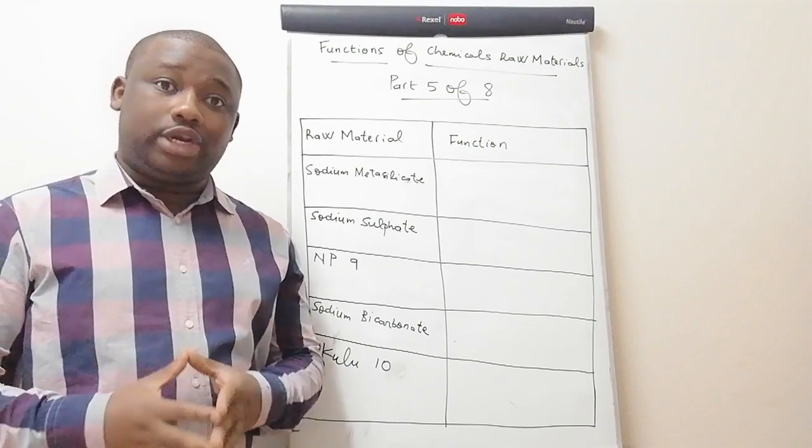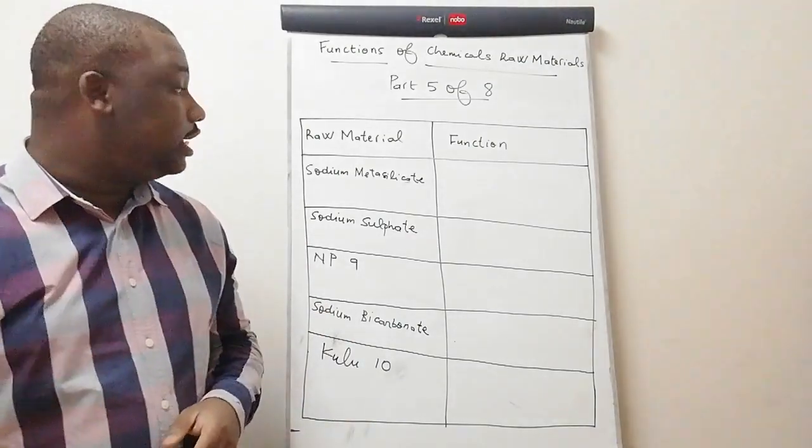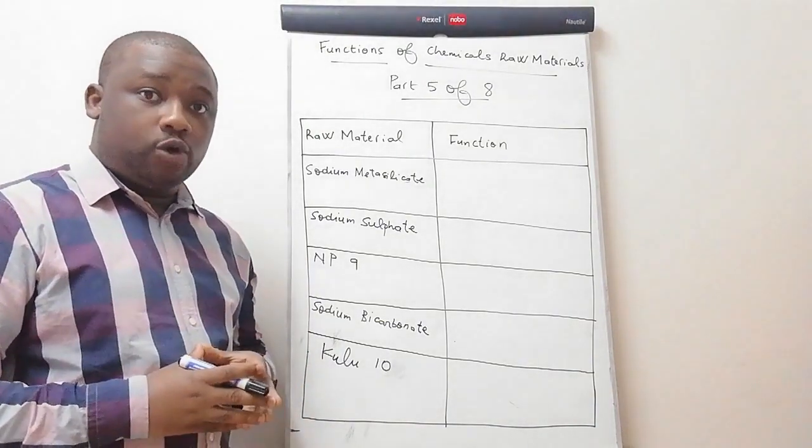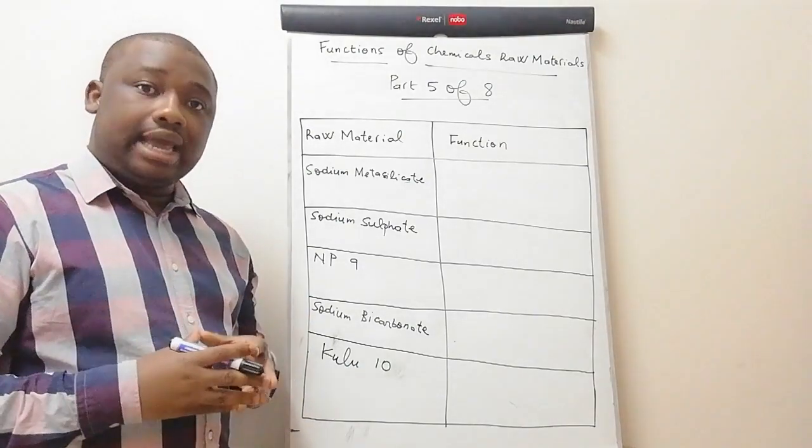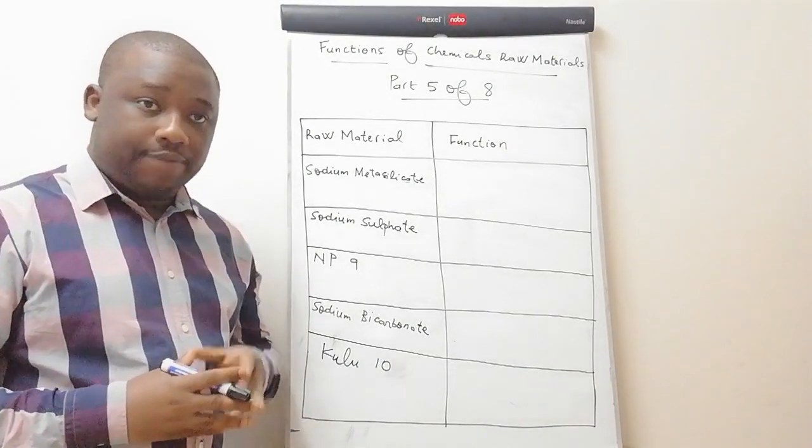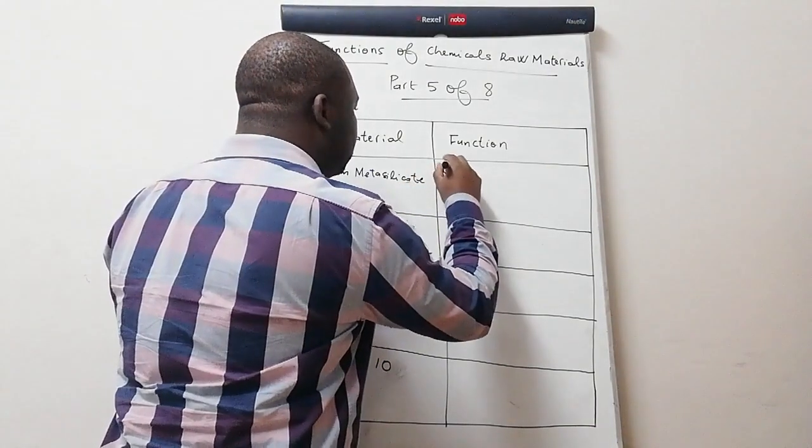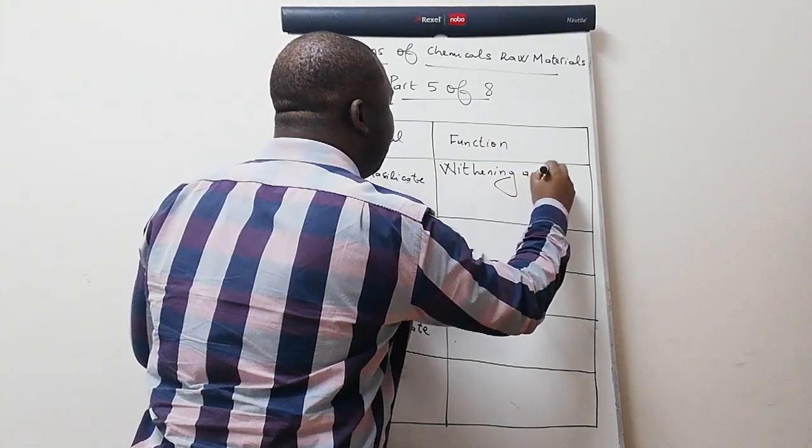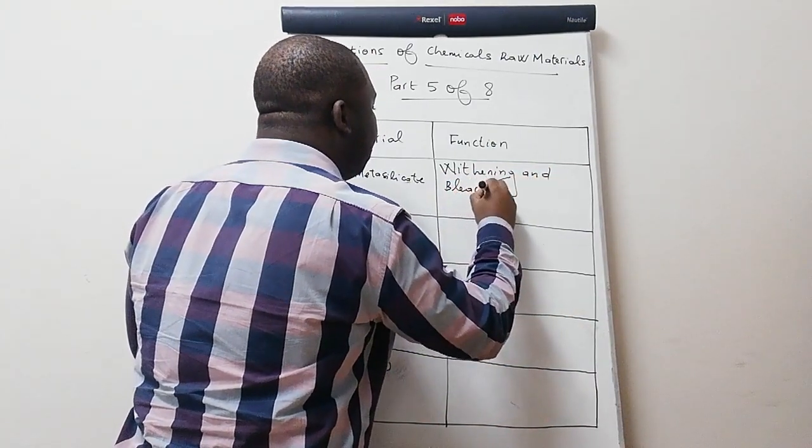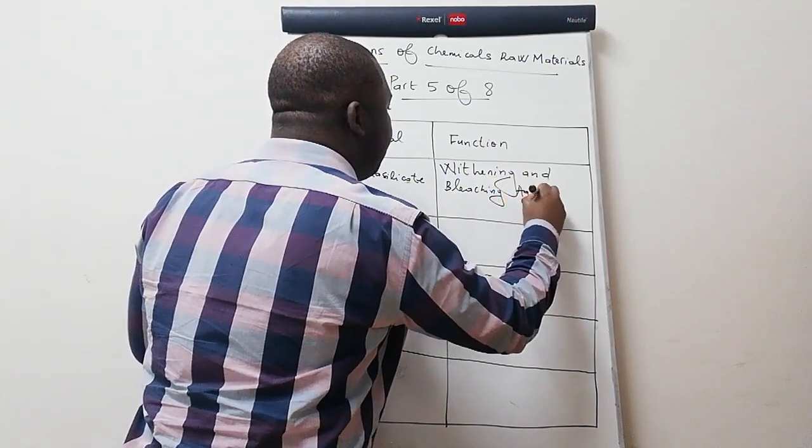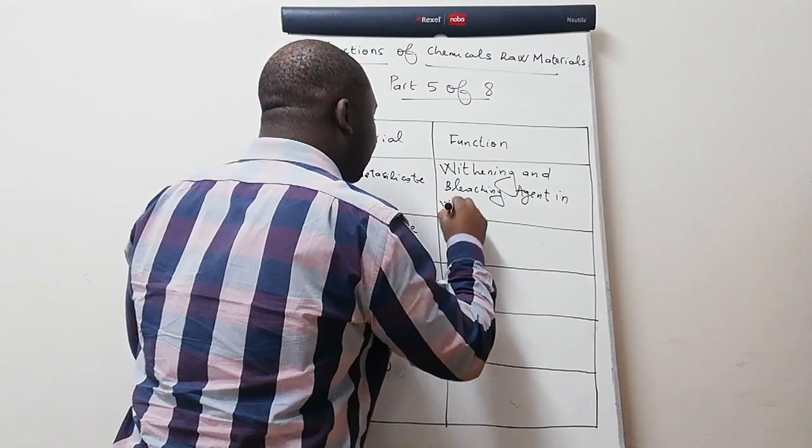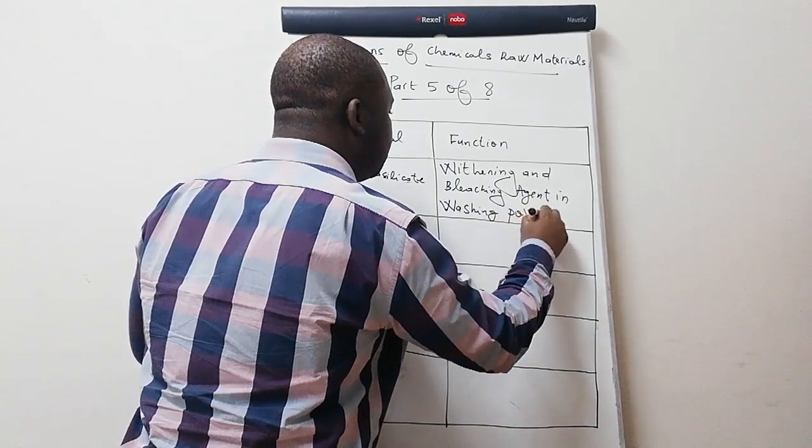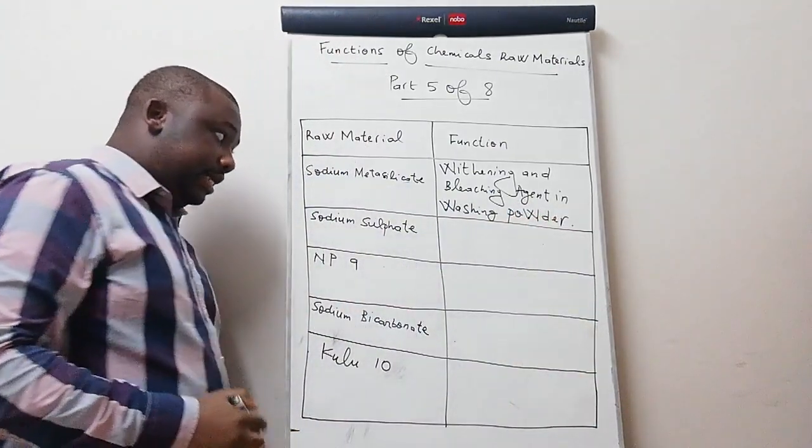Here we go with the first ingredient. The first ingredient is sodium metasilicate. What is it used for? It's used as whitening and bleaching agent in washing powder.